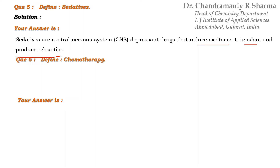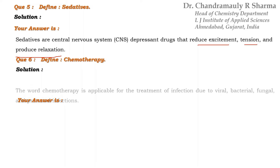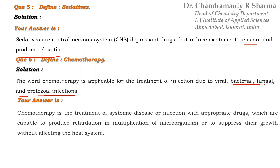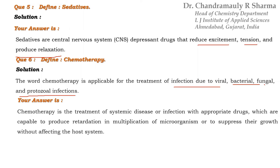The next question is: define chemotherapy. The word chemotherapy is applicable for the treatment of infections due to viral, bacterial, fungal, and protozoal infections. Your answer is: chemotherapy is the treatment of a systemic disease or infection with appropriate drugs which are capable of producing retardation in the multiplication of microorganisms or suppressing their growth without affecting the host system. Chemotherapy is generally also used in the treatment of cancer.